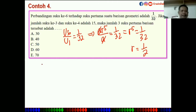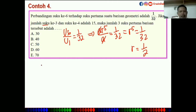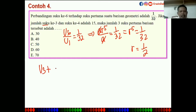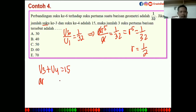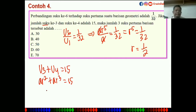Yang kedua: jumlah U3 + U4 = 15. Maka AR² + AR³ = 15.